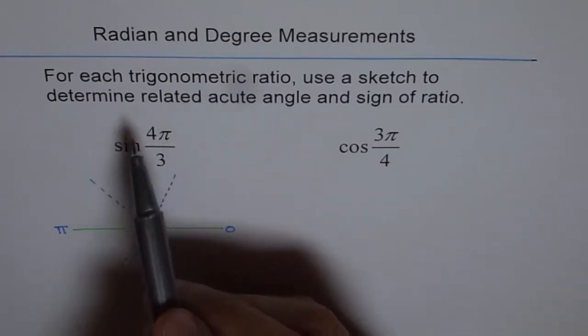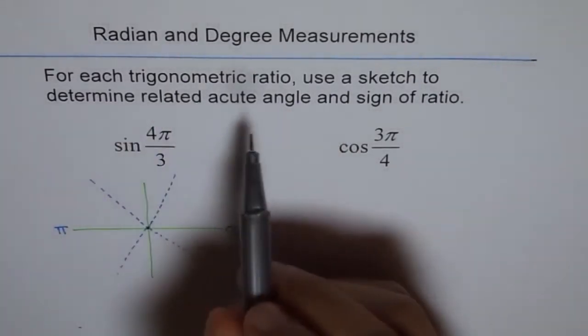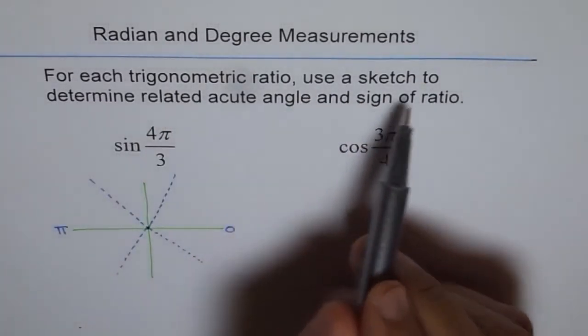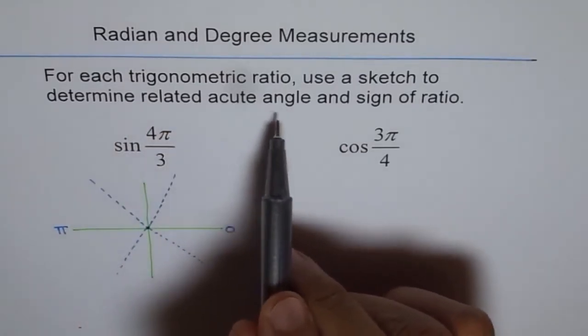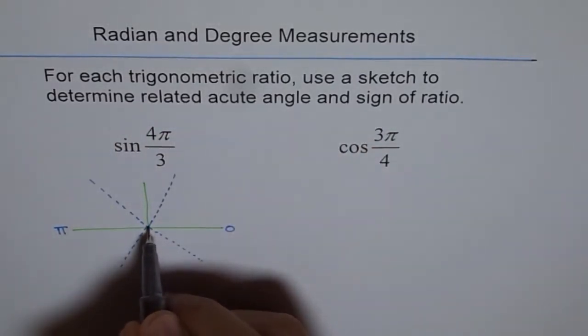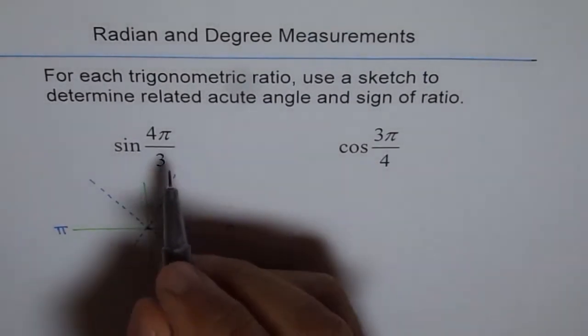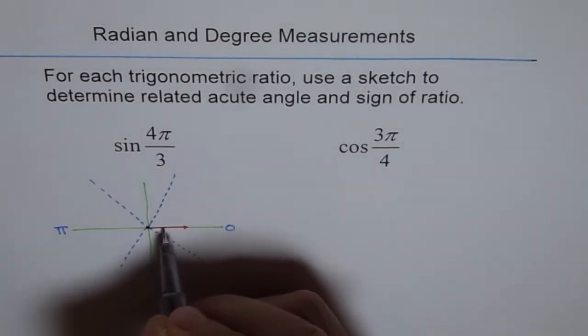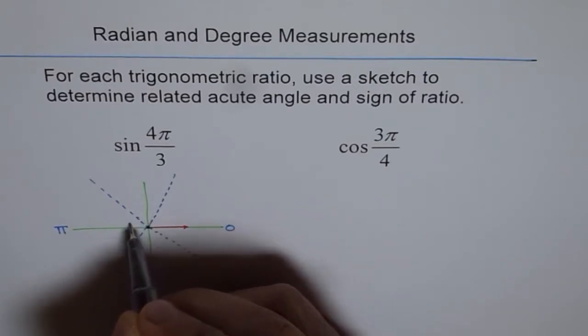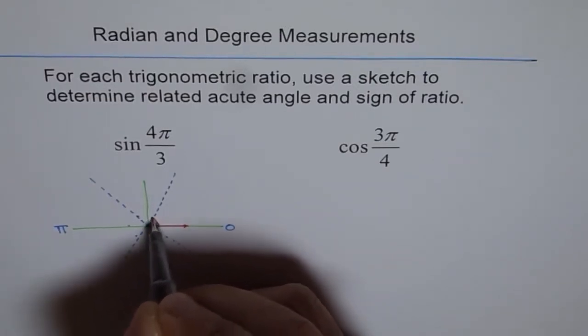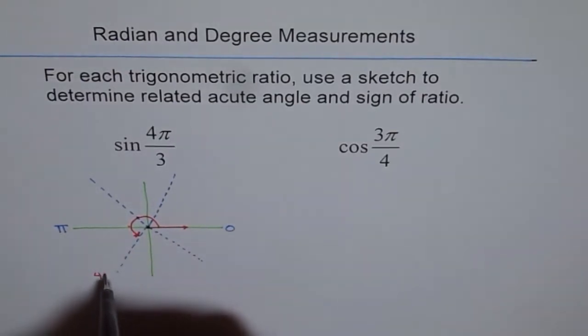Use a sketch to determine related acute angle and sine of the ratio. So we know initial arm is here. Now 4π by 3 lands where? Terminal arm will be 1, 2, 3, 4. So that is 4π by 3.